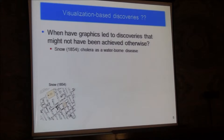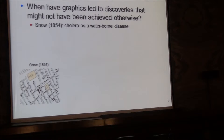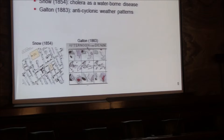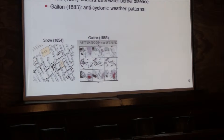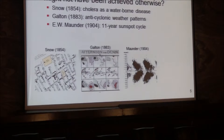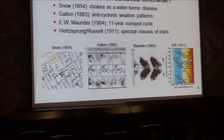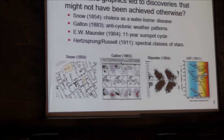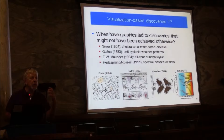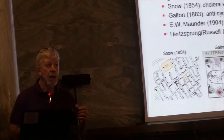I have a couple of examples. Snow's discovery of cholera as a waterborne disease. Galton's discovery that weather patterns in the northern hemisphere have an anticyclonic pattern of pressure over area, mirrored by the reverse pattern in the southern hemisphere. The discovery of sunspot cycles by Maunder with what he called the Butterfly Diagram, and the Hertzsprung-Russell Diagram leading to the classification of stars by their color-luminosity relationship. What else? When recently or in the past have people used visualization to make a scientific discovery that might not have occurred otherwise?